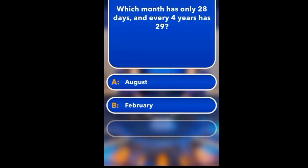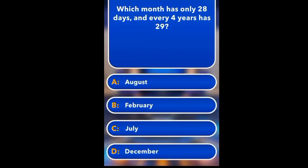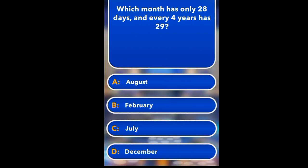Which month has only 28 days and every 4 years has 29? August, February, July, December. February.